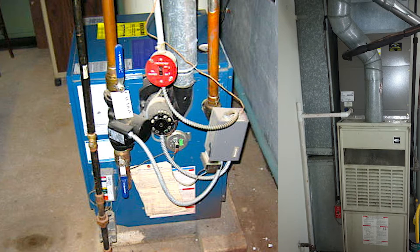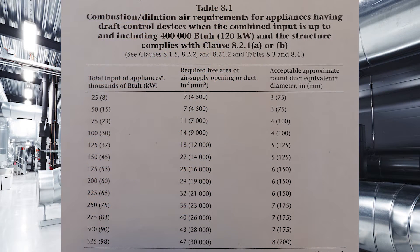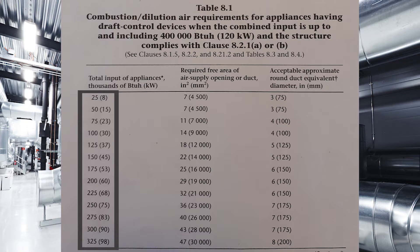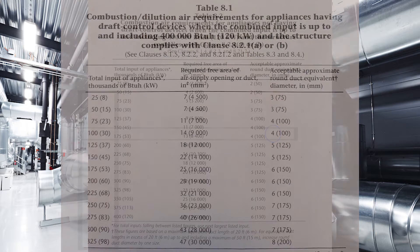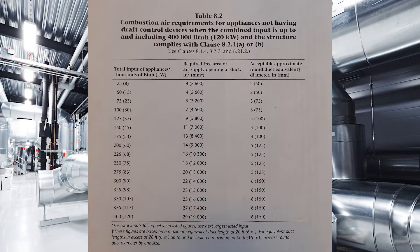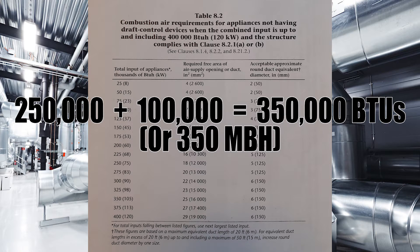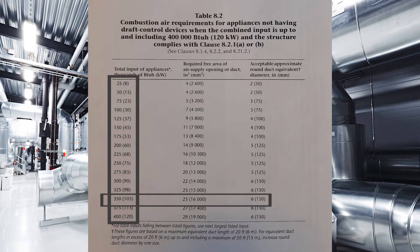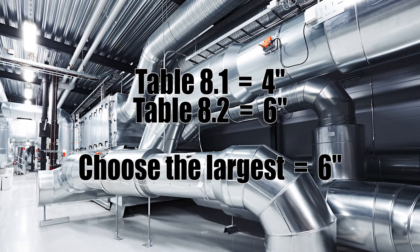For a last example, let's flip the tables. Now I have a 100,000 BTU furnace equipped with a drafthood and a 250,000 BTU fan-assisted boiler. For table 8-1, I only use the drafthood equipped appliance — that's 100,000 BTUs. I come down to that, go across to the right, and I need a 4-inch air supply. Now I check all appliances combined with table 8-2: 100,000 plus 250,000 is 350,000 BTUs. Going down to 350 in table 8-2 and across to the right, I require a 6-inch round air supply. That's bigger than the 4-inch from table 8-1, so 6 inches will be my size.